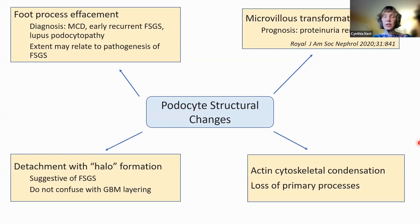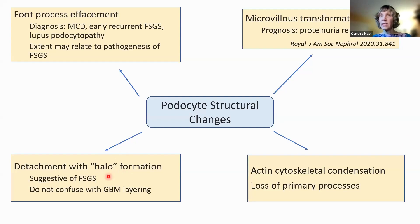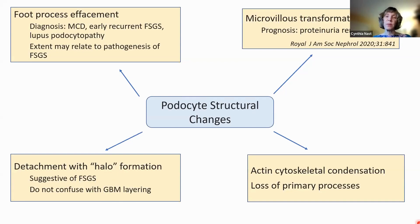There may be detachment of foot processes from the basement membrane with laying down of new loose matrix, or basement membrane material forming — as shown in this image. This is suggestive of FSGS on EM if it hasn't been identified by light microscopy, immunofluorescence, or thick section. It's very important that this is not confused with layering of the glomerular basement membrane.